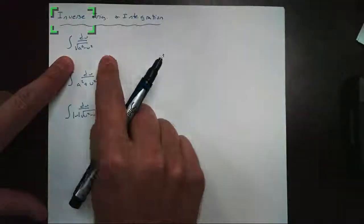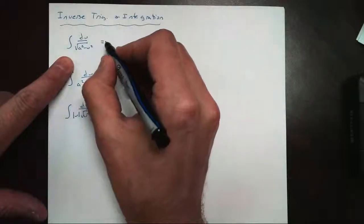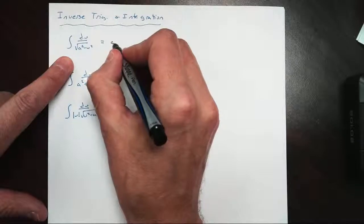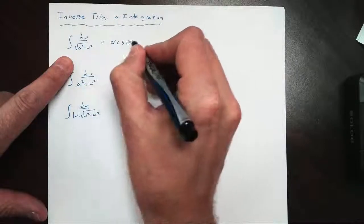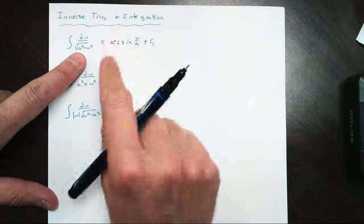When we take the antiderivative, now I'm just going to give you the rule. If you want to learn how to find these, you can find them on YouTube or something like that. So this becomes the arc sine of u over a plus c. That's just our rule.